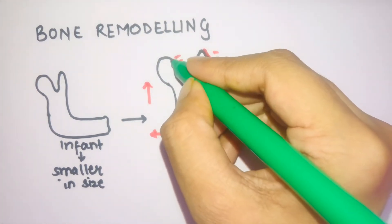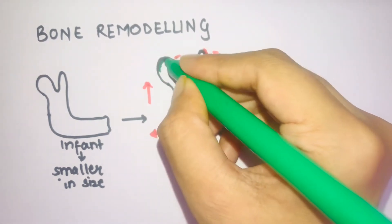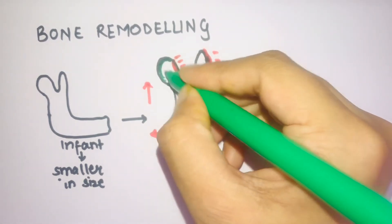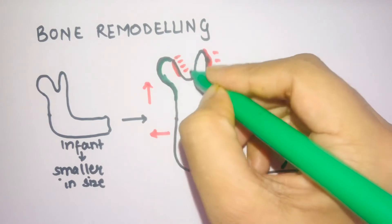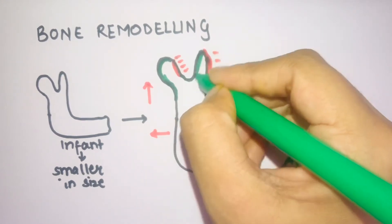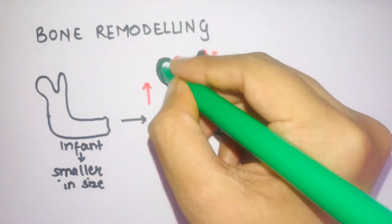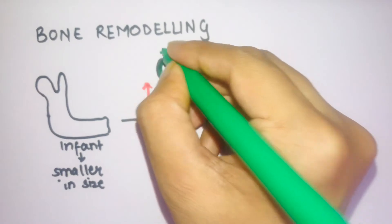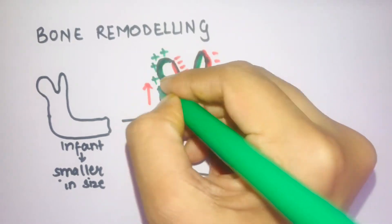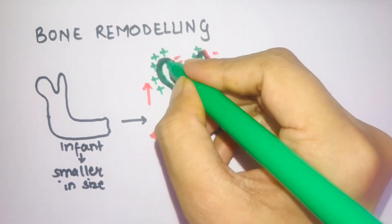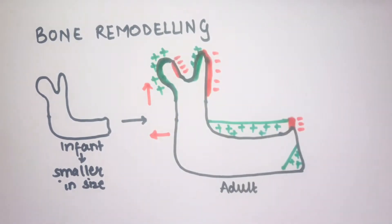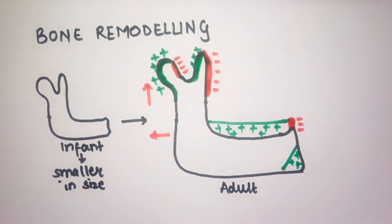There is also deposition at the condylar head and near the coronoid as well. This is the fixed pattern — where exactly the bone is resorbed and where it is deposited — and because of this there is a change in position of the mandible.